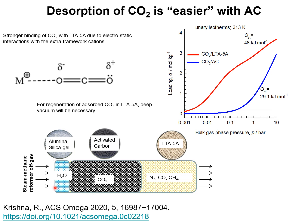In practice, a steam methane reformer off-gas mixture is fed to a bed packed with three different adsorbents. First, we have alumina or silica gel, which has the task of removing any trace water in the feed mixture. Then we have a layer of activated carbon, whose primary task is to adsorb the CO₂. This is followed by a layer of 5A zeolite, whose task is to produce hydrogen of the required purity by adsorbing the impurities nitrogen, carbon monoxide, and methane.